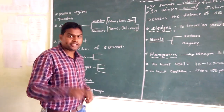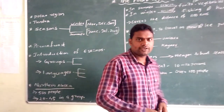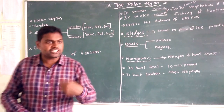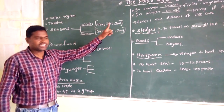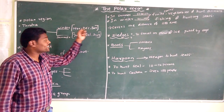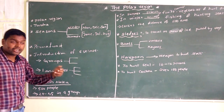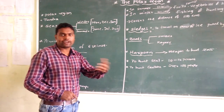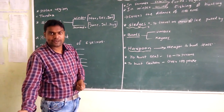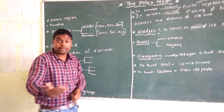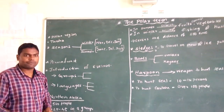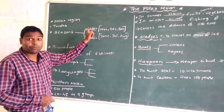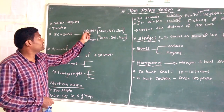Mostly we experience two typical seasons. First is Summer Season and second is Winter. Winter starts in the months of November, December, and January — so for 3 months the North Polar Regions experience Winter Season.